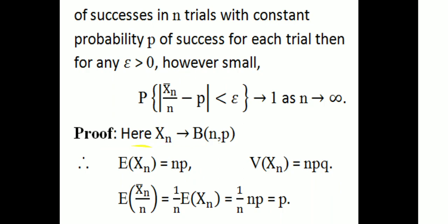Here Xn follows a binomial distribution with parameters N and p. The number of trials is N and probability of success is p. Then expectation of Xn equals np and variance equals npq for the binomial distribution. So expectation of Xn/N equals (1/N) times E(Xn) equals p.